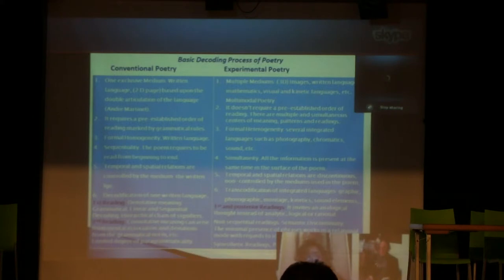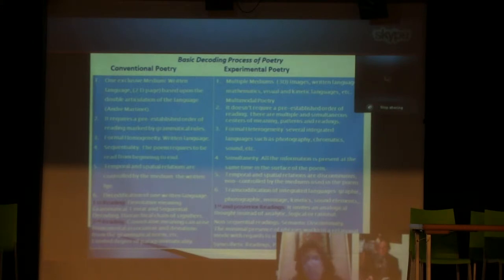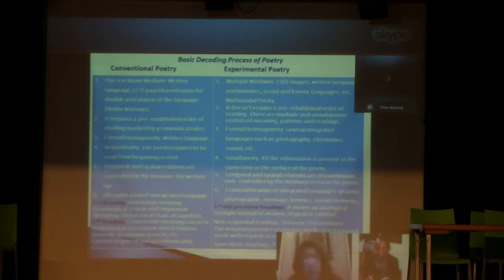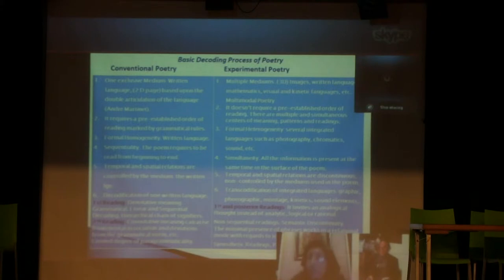Another feature of conventional poetry is that it requires a pre-established order of reading marked by grammatical rules. The poem starts at a particular point in time and place on the page, and we have to keep reading. It's a sequential reading, and we have to finish that reading. In an experimental poem, usually there is no pre-established order of reading.